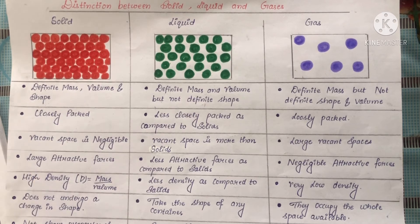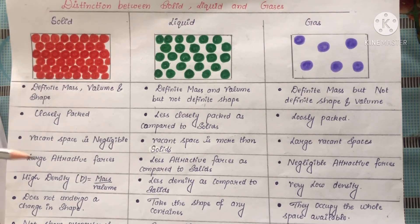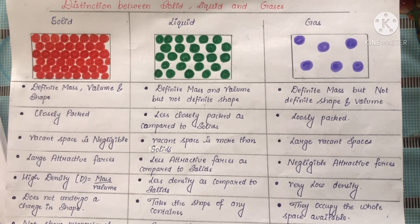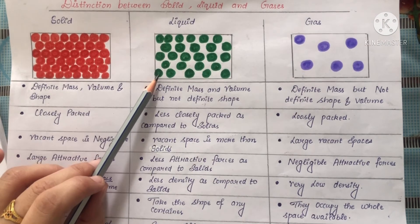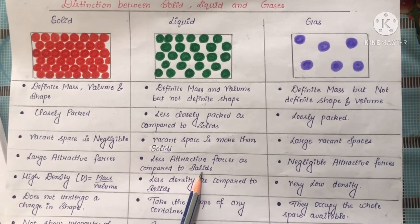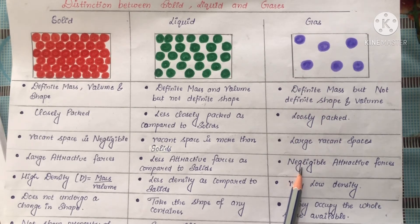Next, in case of solids, the particles are very close to each other, so there are large attractive forces because attractive forces hold the particles together. That is why in case of solids, there are large attractive forces present. In case of liquids, there is more distance between the particles, so there are less attractive forces as compared to that of the solids. And in case of gases, there are negligible attractive forces.